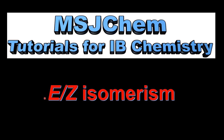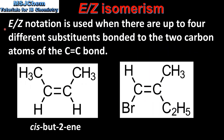This is MSJChem. In this video I'll be looking at EZ isomerism. The EZ notation is used when there are up to four different substituents bonded to the two carbon atoms of the carbon-to-carbon double bond. The molecule on the left has two different substituents bonded to each carbon of the carbon-to-carbon double bond. Because both substituents are on the same side of the carbon-to-carbon double bond we name this cis-butene.